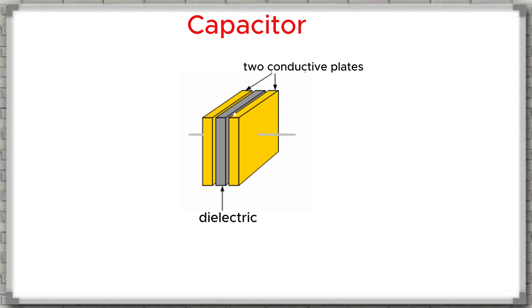Definition of a capacitor: A capacitor is a passive electronic component. It has the ability to store energy in the form of an electric field. Its structure consists of two conductive plates, usually made of metal, separated by a dielectric layer such as ceramic, mica, paper, plastic, or a metal oxide.